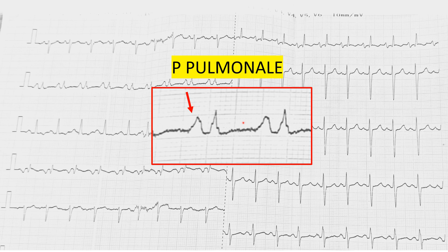This is a very important finding — P pulmonale. In the zoomed-in view of the long lead, we can clearly see that the P wave is very large compared to the QRS complex. By definition, P pulmonale must be 2.5 millimeters, and this is clearly much more than that. This finding signifies that something is involving the right side of the heart.